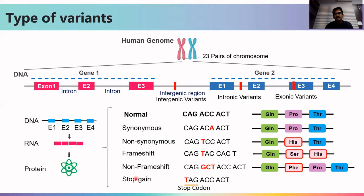The last type is the stopgain mutation. If a variant occurs at a much earlier stage before the complete translation of the protein, it creates a premature stop codon. Such a mutation is known as a stopgain mutation.